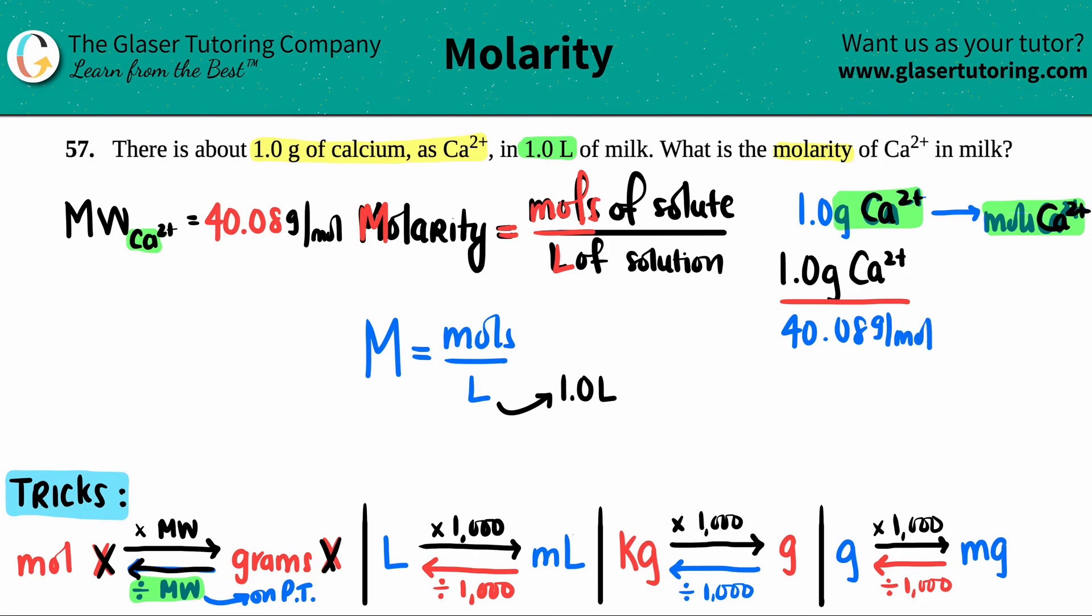Let's do the math. It's one divided by 40.08. I start off with two sig figs, so I should technically have two sig figs at the end. This is 0.025 moles of Ca2+.